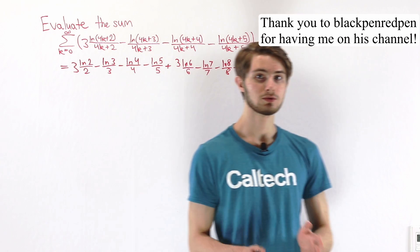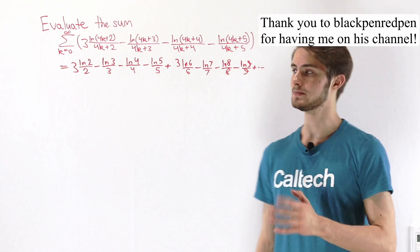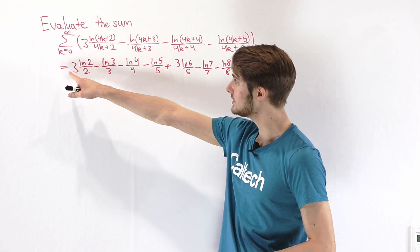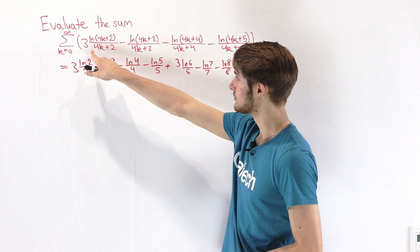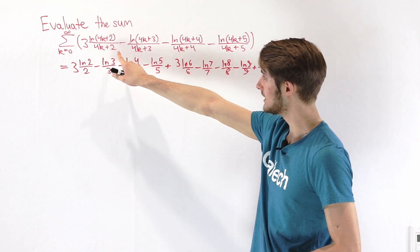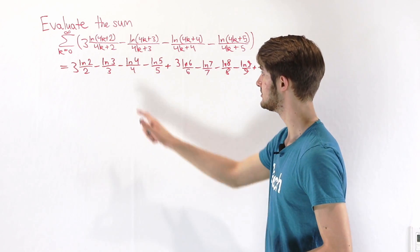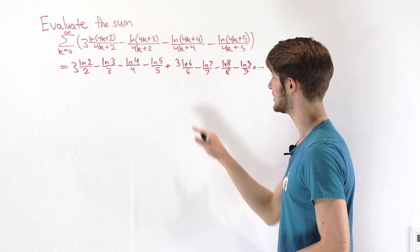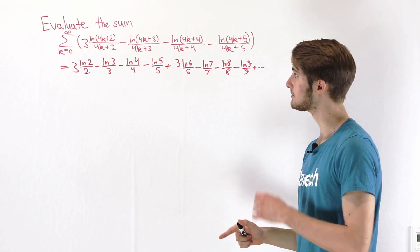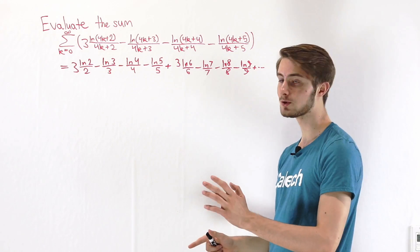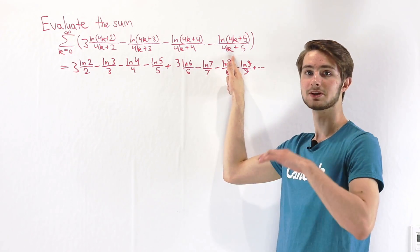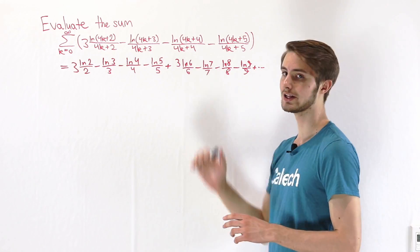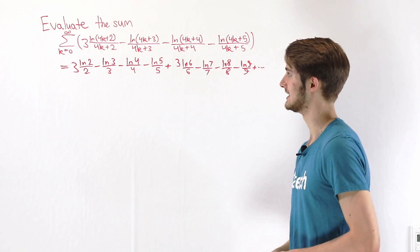We are going to do the 2017 Putnam problem B4. Evaluate this sum from k equals 0 to infinity of: 3 times ln(4k+2)/(4k+2), minus ln(4k+3)/(4k+3), minus ln(4k+4)/(4k+4), minus ln(4k+5)/(4k+5), where ln denotes the natural log, log base e.